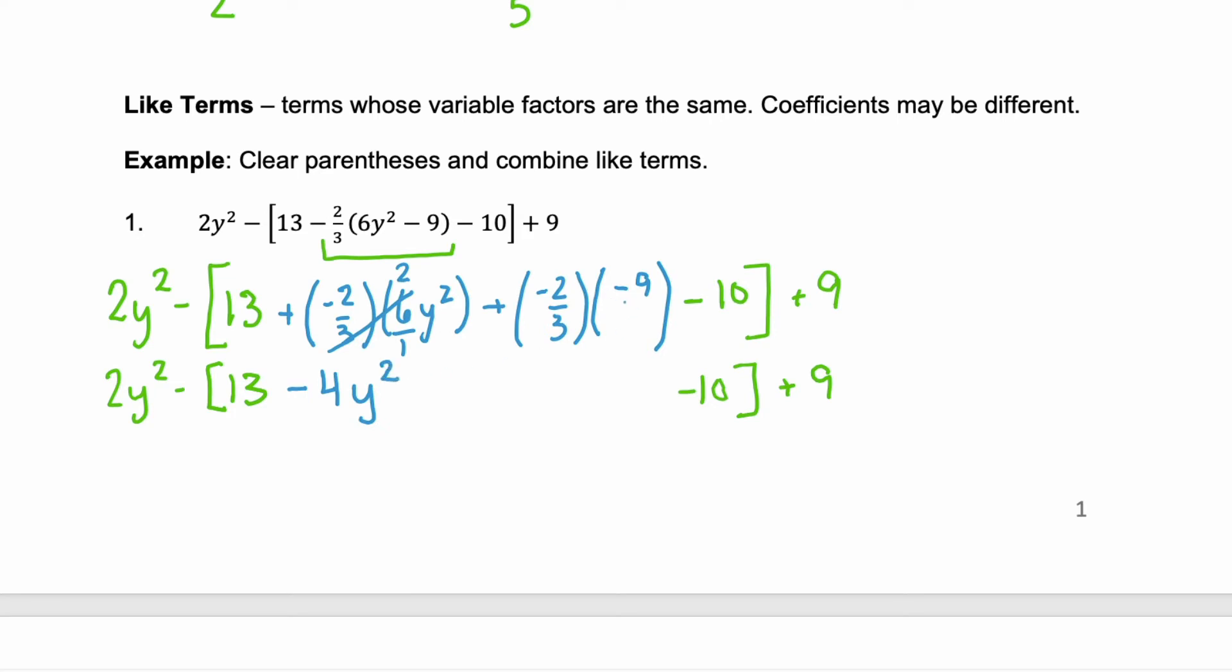The second term we have negative 9 which is equivalent to negative 9 over 1. We have a negative 2 times a negative so we're going to end up with a positive. The 3 in the denominator and the 9 in the numerator share a 3 in common. So we're left with a 3 in the numerator. And 2 times 3 is 6.